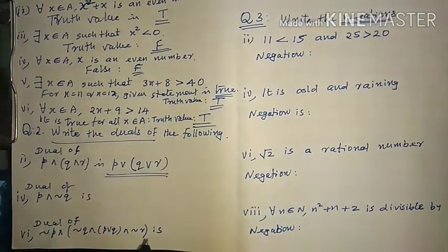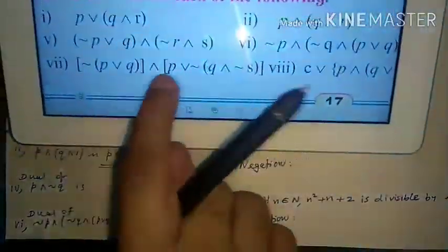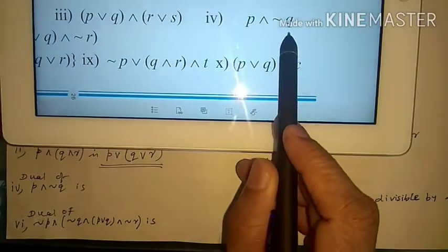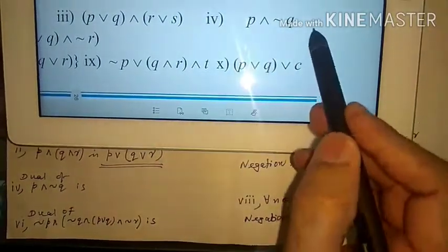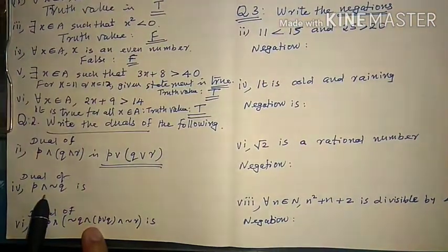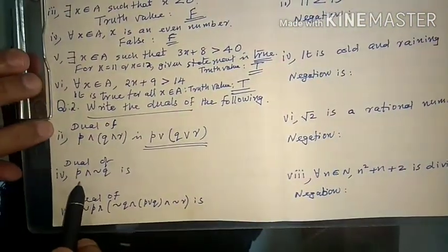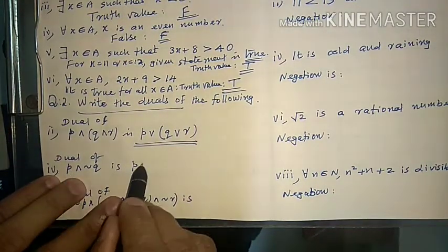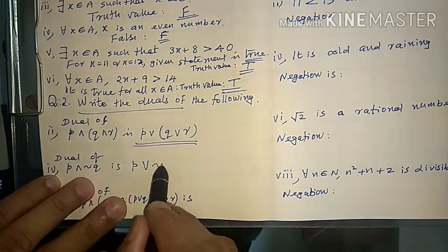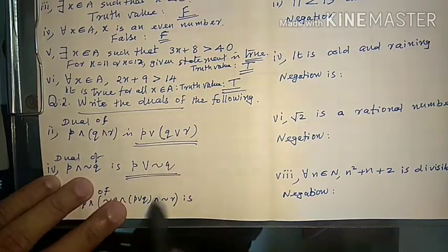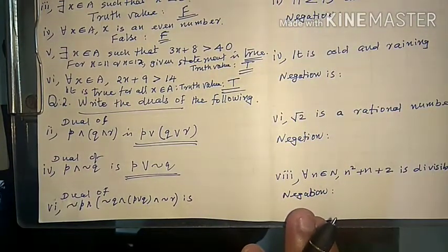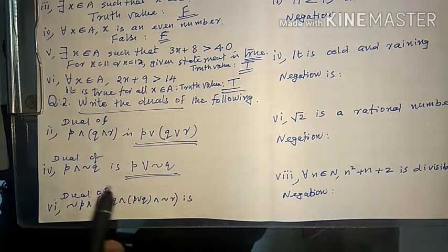Question number 4: dual of P ∧ ¬Q is required. The dual is P ∨ ¬Q — the conjunction becomes disjunction, and negation Q remains as it is. That is the dual of question number 4.